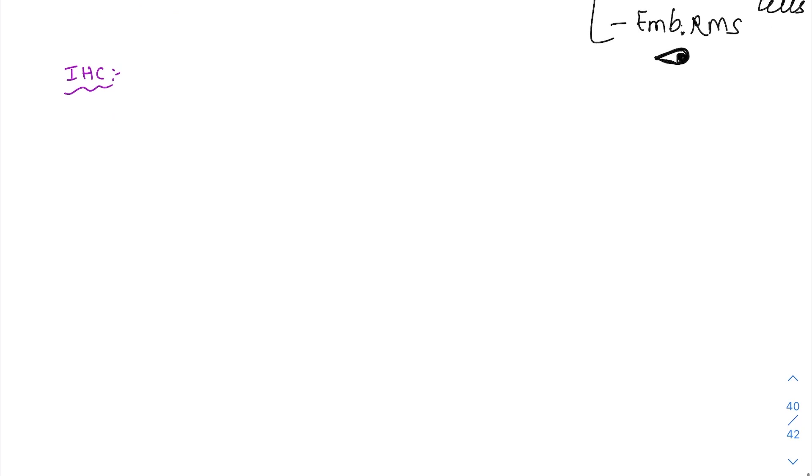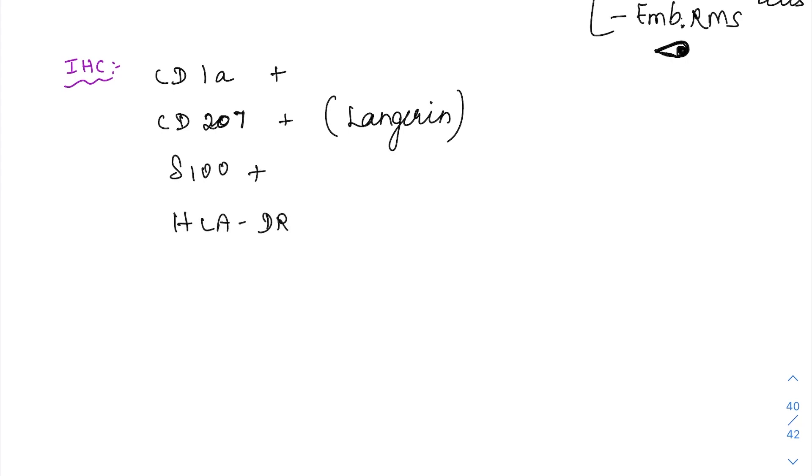Coming to the immunohistochemistry again very important. LCH is going to be positive for CD1A then CD207 which is called as the Langerin protein. CD207 is Langerin protein, so CD207 is going to be positive, S100 is going to be positive and then HLA-DR is going to be positive.